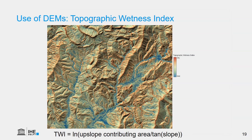We can also derive more complex products from DEMs by applying equations. One example is the topographic wetness index, which is the natural logarithm of the upslope contributing area divided by the tangent of the slope. It indicates which areas are dry and which are expected to be wetter, as you can see in the layer.